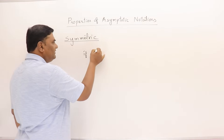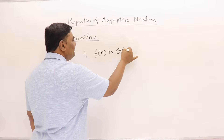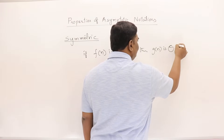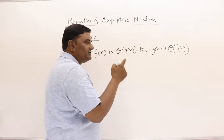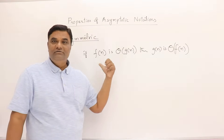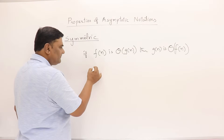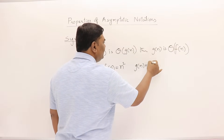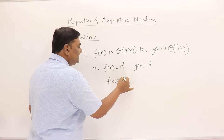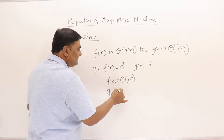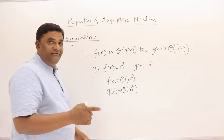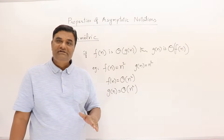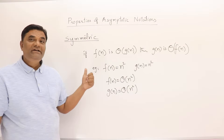Symmetric property: if f(n) is Θ(g(n)), then g(n) is Θ(f(n)). Symmetric property is true only for theta notation. For example, if f(n) = n² and g(n) = n², then f(n) is Θ(g(n)) = Θ(n²), and g(n) is Θ(n²) = Θ(f(n)). When both functions are the same, they are symmetric — one is theta of the other, and vice versa. This is true only in the case of theta notation.